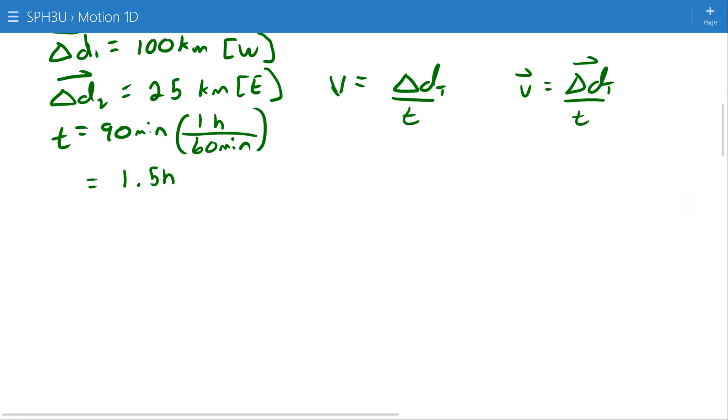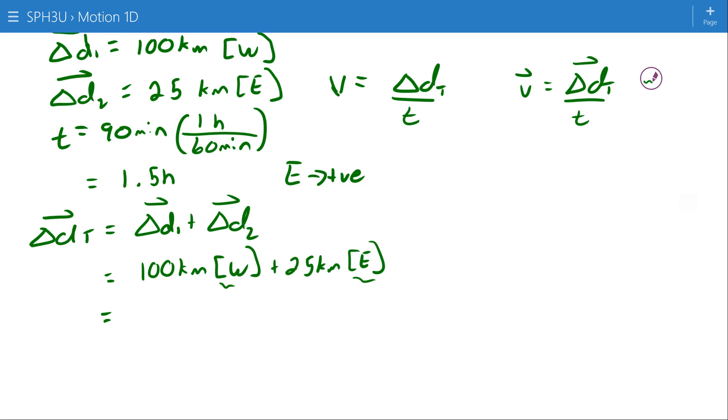So I have to go back here for a second and calculate those totals. The total displacement is going to be displacement one plus displacement two. In this case, 100 kilometers west plus 25 kilometers east. I need to be careful here. I don't have a common positive direction right now. Another example where it might be easier to make west positive, but I just stick with my standard and make east positive. That means that this 100 kilometers west becomes negative 100 kilometers east, and this is still 25 kilometers east, for a total of negative 75 kilometers east.